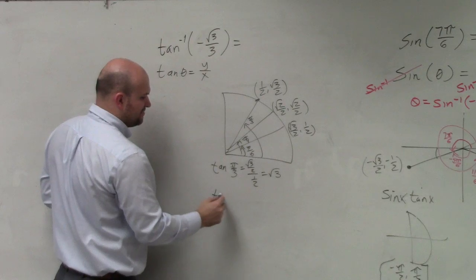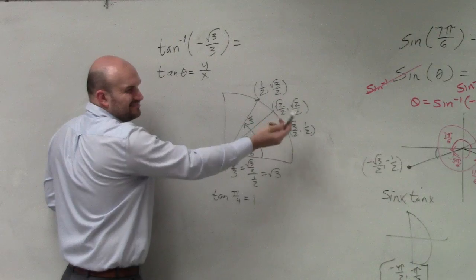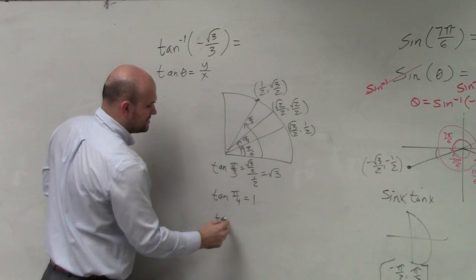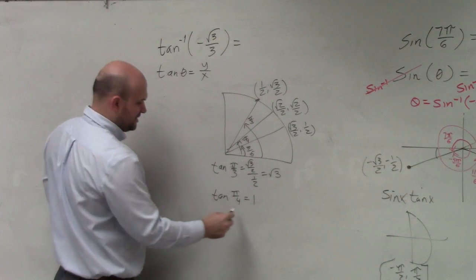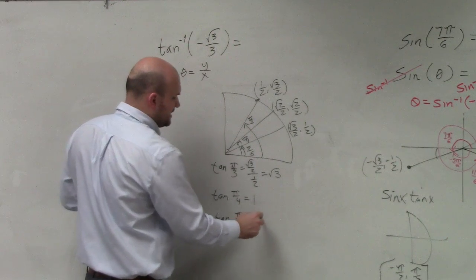What is the tangent of pi over 4? You guys should already know this one. That's just going to equal 1, because they're the same, right? So can we use the elimination to realize that it's going to be pi over 6? Yes, we can.